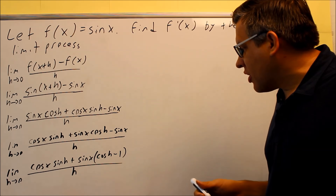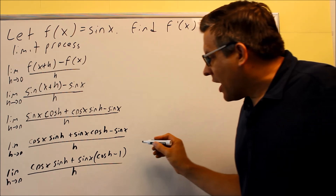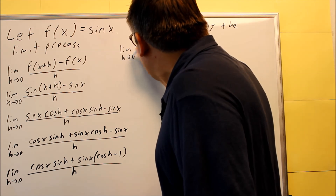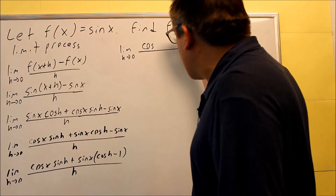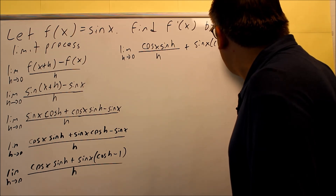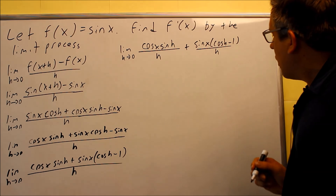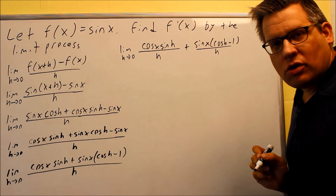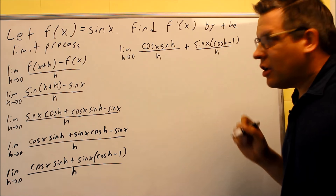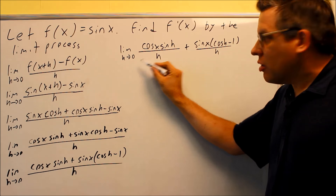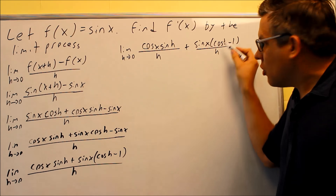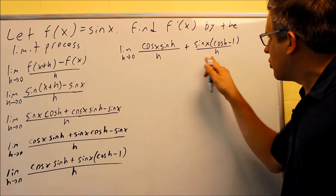I've factored as far as I can go, so now I'm going to split this into two different fractions: cosine x sine h over h, and sine x times the quantity cosine h minus 1, divided by h. The reason I'm doing that is because I'm looking for special limits. From the limits section, there are two special limits with sine and cosine: the limit as h goes to 0 of sine h over h equals 1, and the limit as h goes to 0 of 1 minus cosine h over h equals 0.